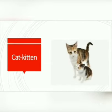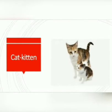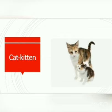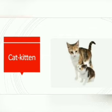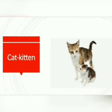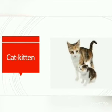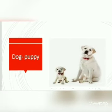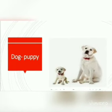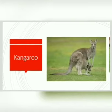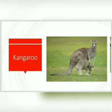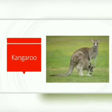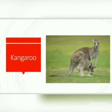First, Cat. The young one of cat is kitten. Dog. Puppy. Kangaroo. Kangaroo's young one is joey.